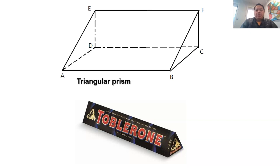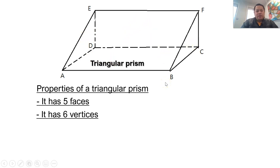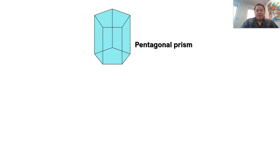In order to describe a prism, we need to verbalize its properties. For a triangular prism, we have five faces — one, two, three, four, five. A total of five faces. Six vertices — one, two, three, four, five, six. And how many edges do we have? One, two, three, four, five, six, seven, eight, nine — so there are nine edges for a triangular prism.